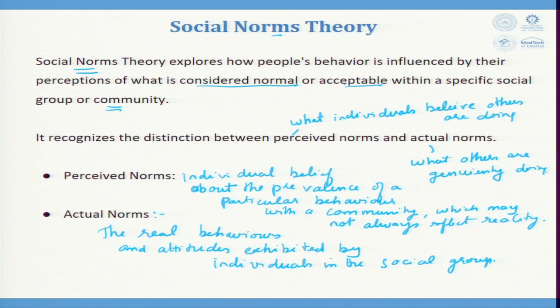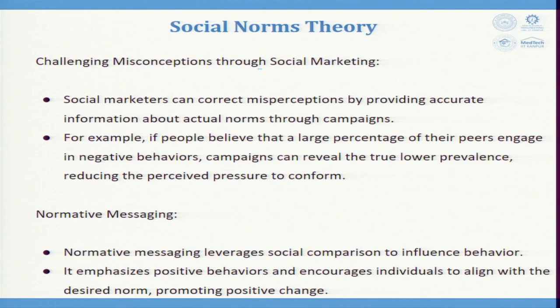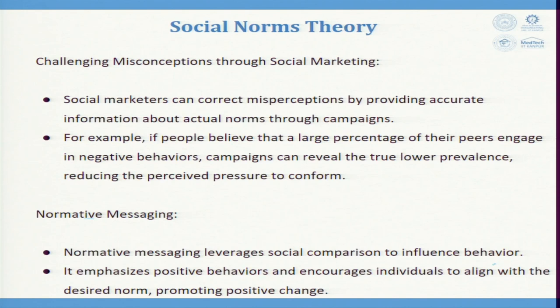Challenging misconceptions through social marketing: social marketers can correct misperceptions by providing accurate information about actual norms through campaigns. For example, if people believe that a large percentage of their peers engage in negative behavior, campaigns can reveal the true lower prevalence, reducing perceived pressure to conform. Normative messaging leverages social comparison to influence individual behavior, emphasizing positive behavior and encouraging individuals to align with desired norms to promote positive change.